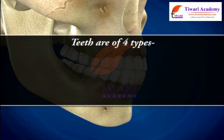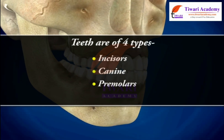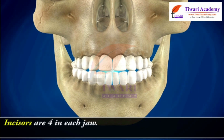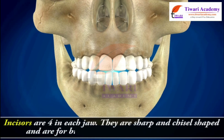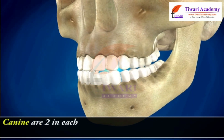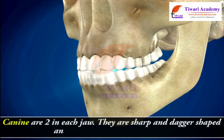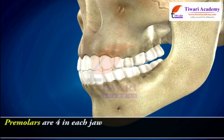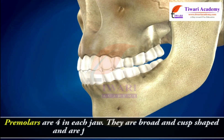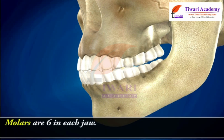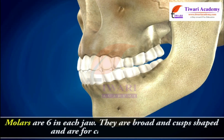Teeth are of four types: Incisors, Canine, Premolars and Molars. Incisors are four in each jaw; they are sharp and chisel shaped and are for biting and cutting of vegetable food. Canines are two in each jaw; they are sharp and dagger shaped and are for tearing animal food. Premolars are four in each jaw; they are broad and cusp shaped and are for chewing and grinding. Molars are six in each jaw and are also broad, cusp shaped, for chewing and grinding.